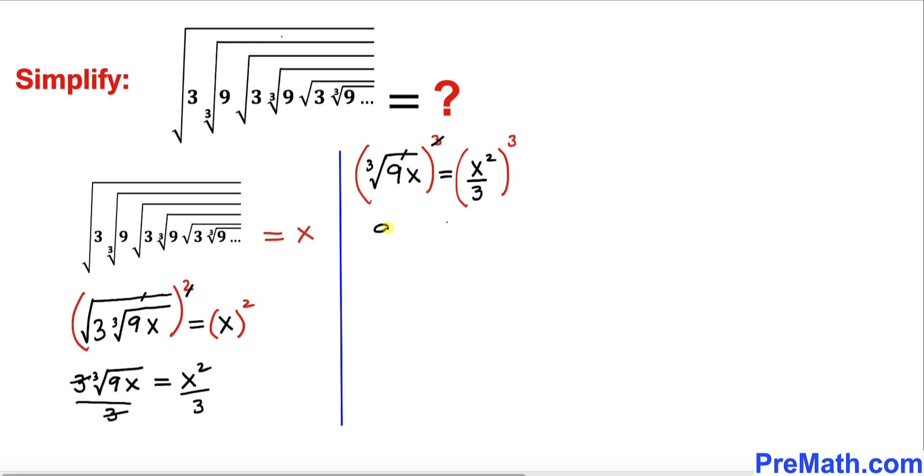So we got on the left hand side 9x equal to, on the right hand side, x to the power 2 and 3 we multiply them. So this is going to become x to the power 6 divided by 3 to the power 3, which is the same as 27.